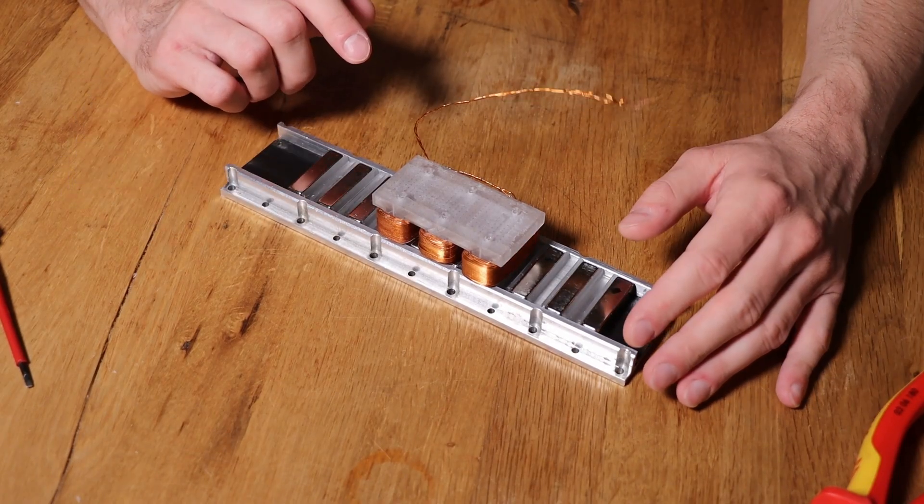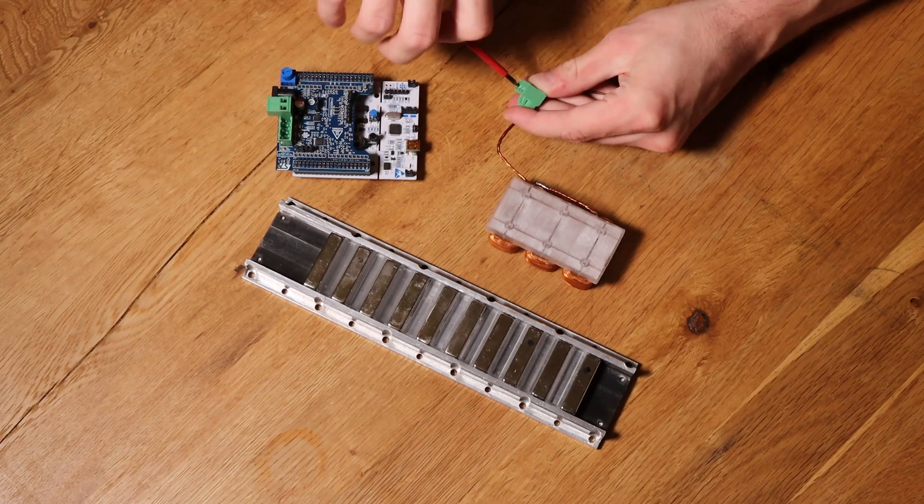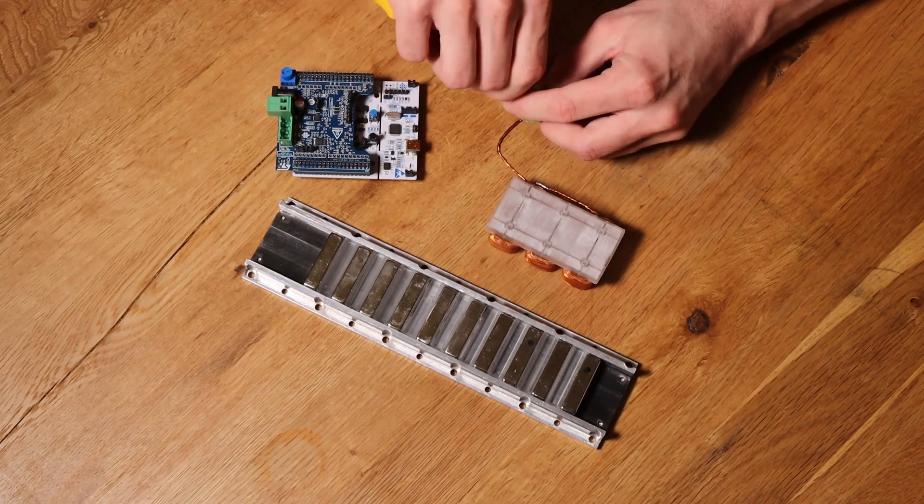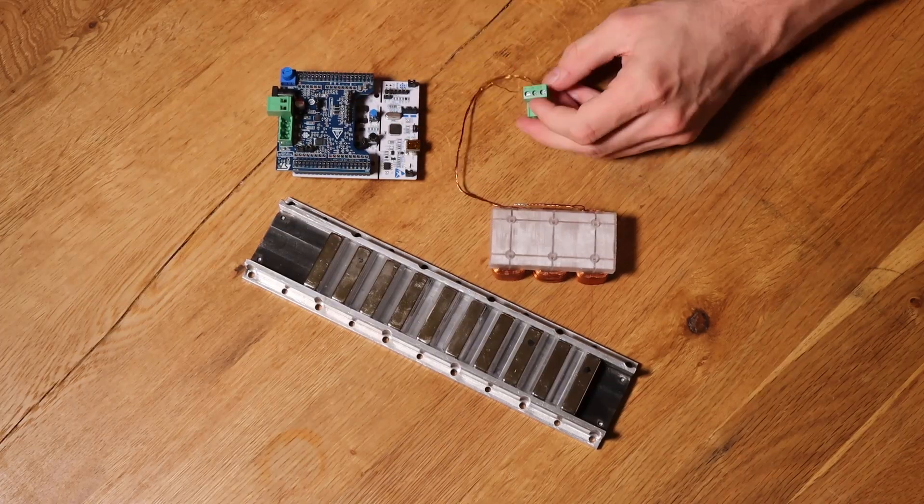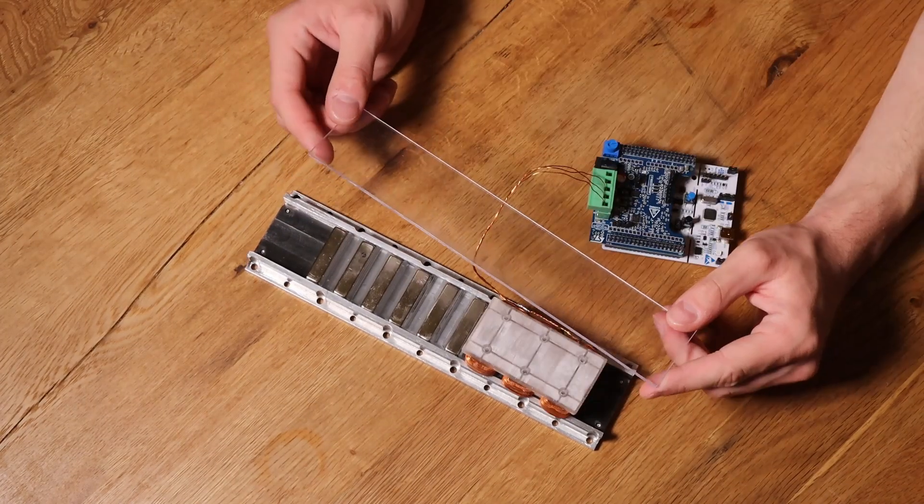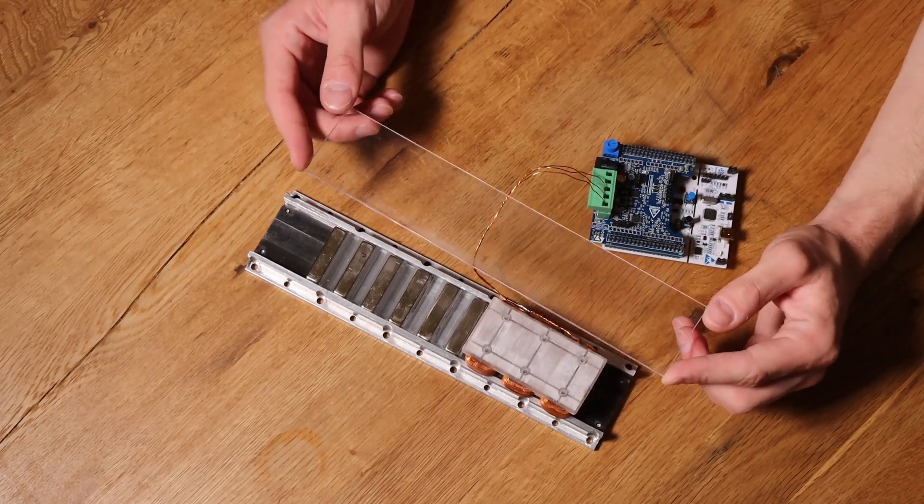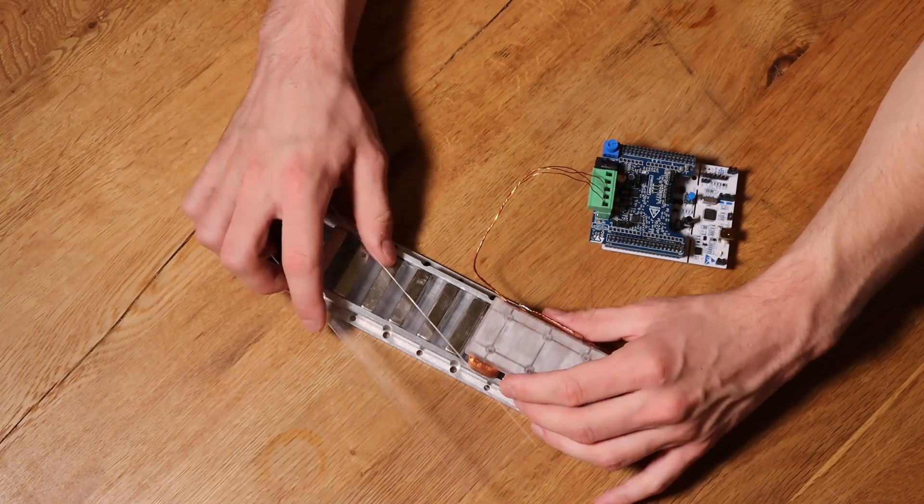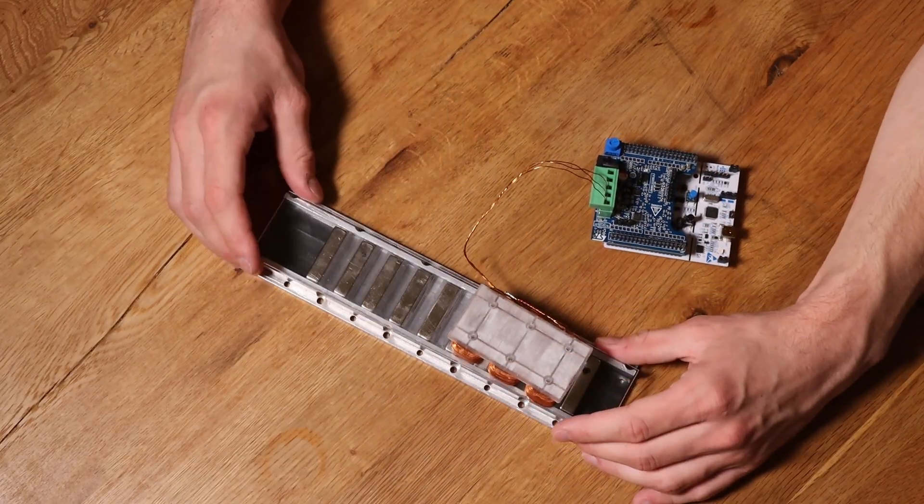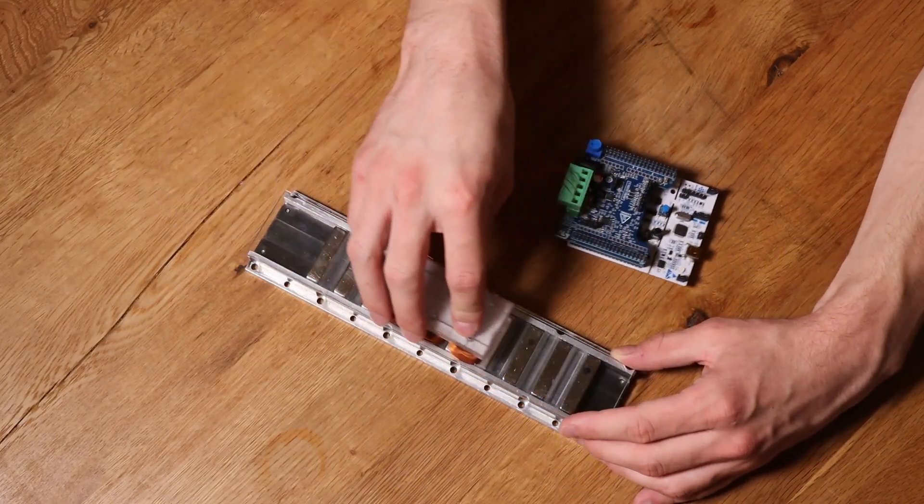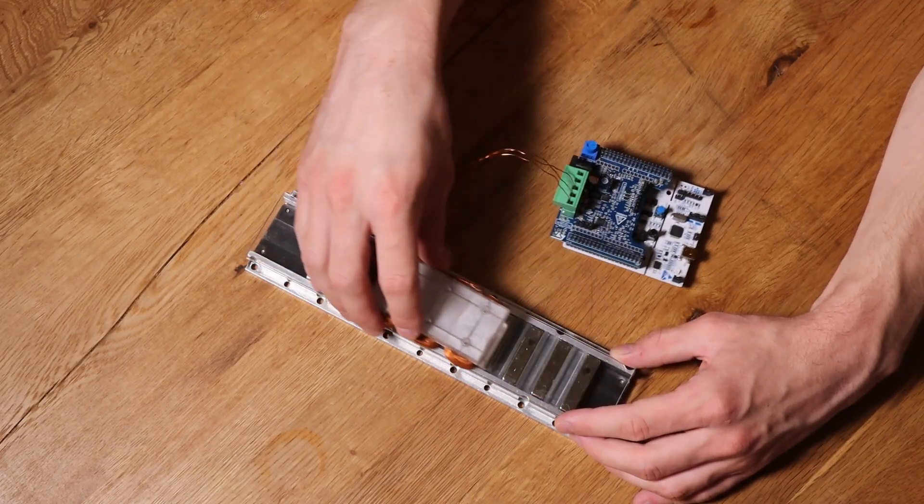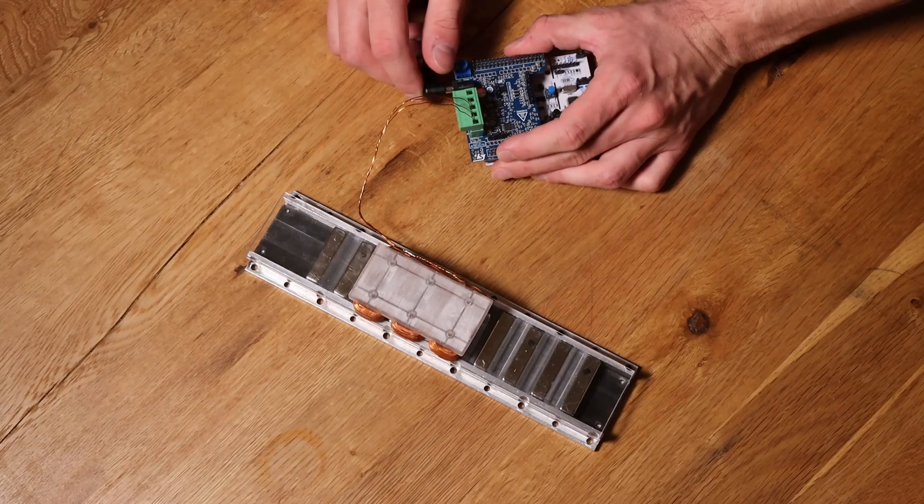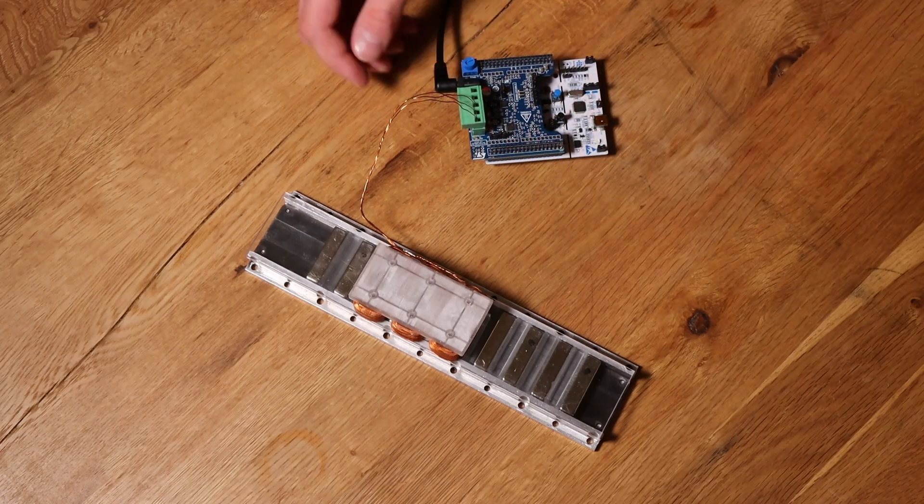Alright, that's it for this video. To control the motor, I used the Nucleo F303RE in combination with ST's IHM16M1 motor driver shield. I sandwiched a 2mm acrylic sheet in between to give the mover a smooth surface to glide on. This is a quick and dirty solution, but sufficient for testing purposes. In the future, the mover will ride on a linear rail. To power the setup, I use a 12V power supply that I had laying around.